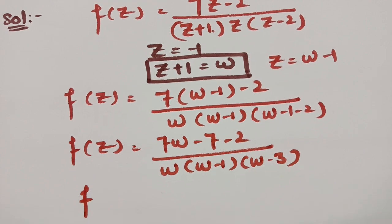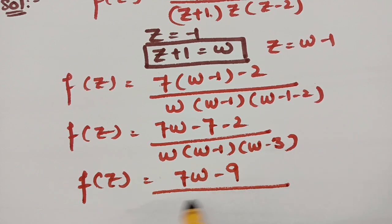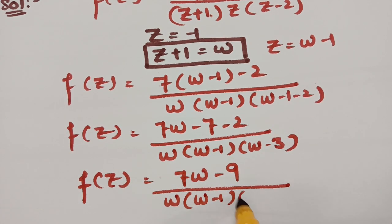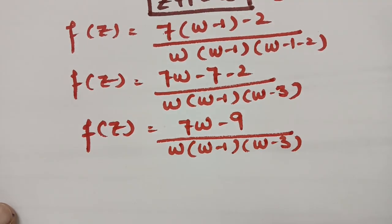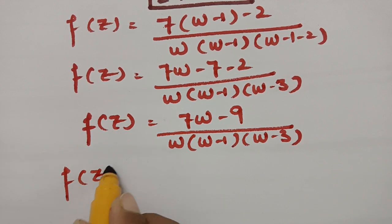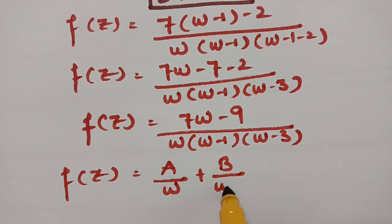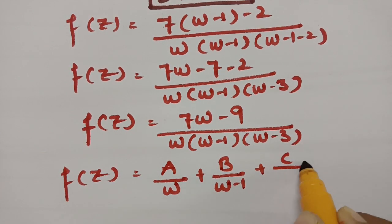So f(z) = (7w - 9) / [w(w-1)(w-3)]. Now we resolve this into partial fractions: f(z) = A/w + B/(w-1) + C/(w-3).